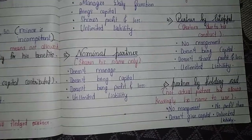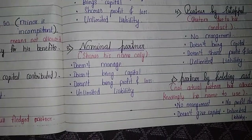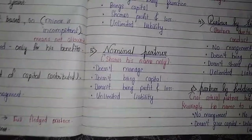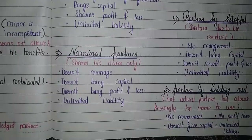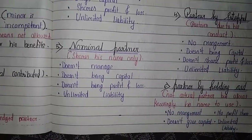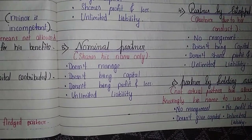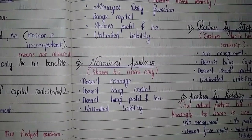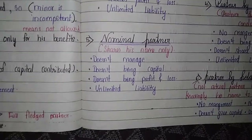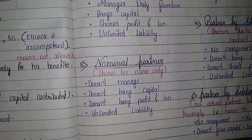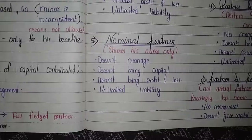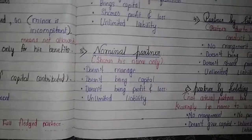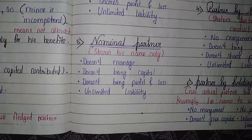A nominal partner is a person who only lends his name to the firm — he allows the partnership firm to use his name. He does not take part in management, does not bring capital, and does not share profit and loss. However, if the firm is unable to repay a loan in the future, the bank can come to him since he allowed his name to be used. That is why his liability is also unlimited.